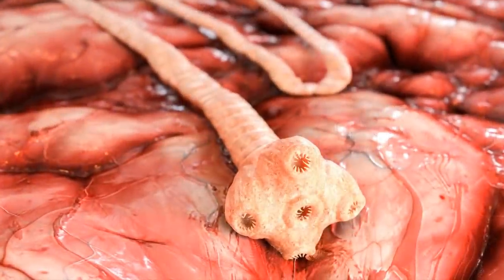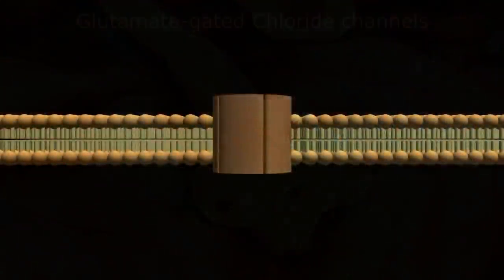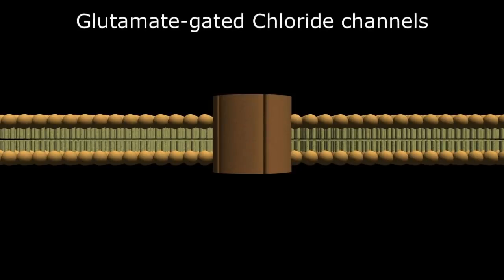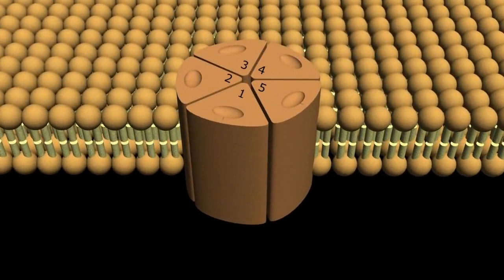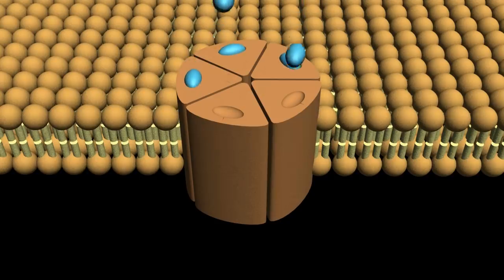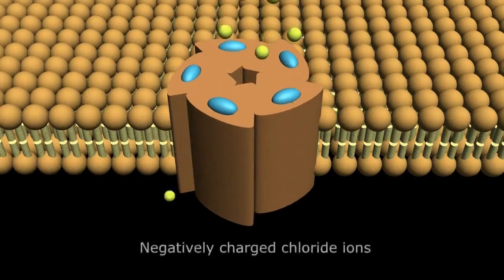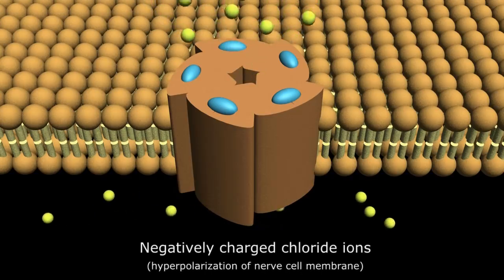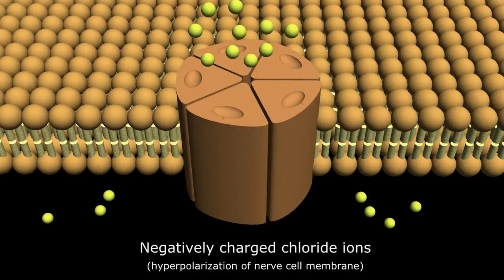In parasites and helminths, glutamate is actually an inhibitory neurotransmitter acting on glutamate-gated chloride channels abbreviated GLU-CL. This transmural ionotropic channel consists of five subunits, each with a glutamate ligand receptor. When activated, a conformational change in the subunits opens up the channel and allows an influx of negatively charged chloride ions, which causes hyperpolarization of the nerve cell membrane and therefore makes it difficult to depolarize and propagate a nerve impulse.